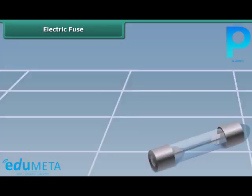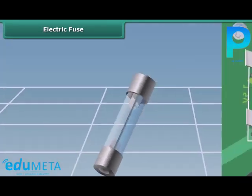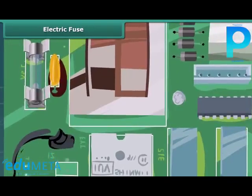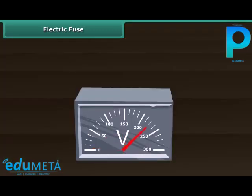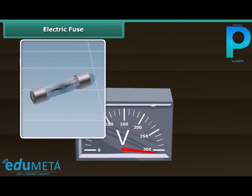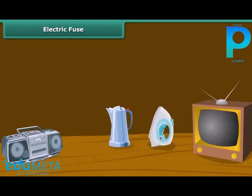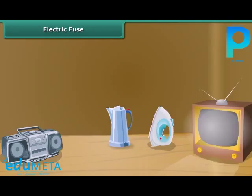A safety fuse is a device that protects an electric circuit. The heating effect of electricity is used in this case. When the current drawn is beyond a certain value, the fuse wire gets overheated, melts, and breaks the circuit. This prevents fire and damage to various electrical appliances.